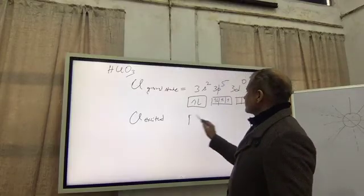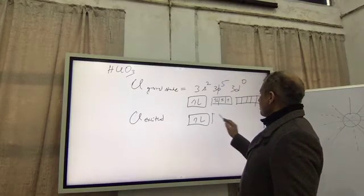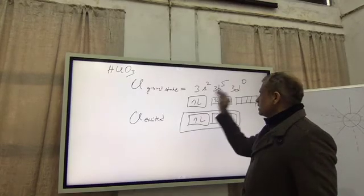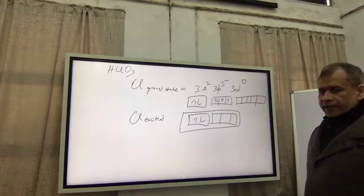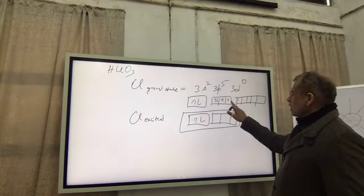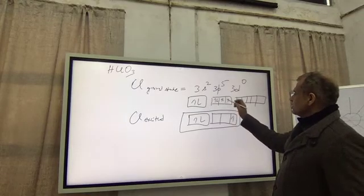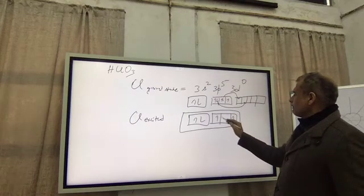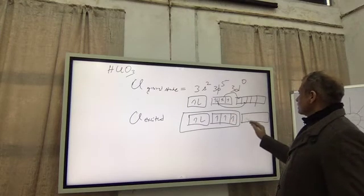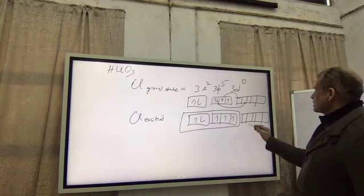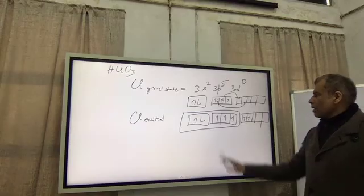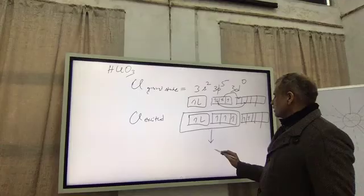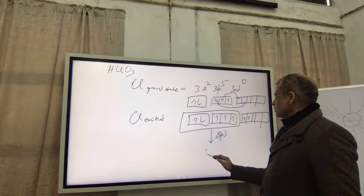So here Cl excited will be like this: in this range of sp3 we have to create 3 unpaired electrons. One is already there, these two will jump into the d orbital, and hence we will create 3 unpaired electrons. Now this will hybridize to give 4 hybrid orbitals.